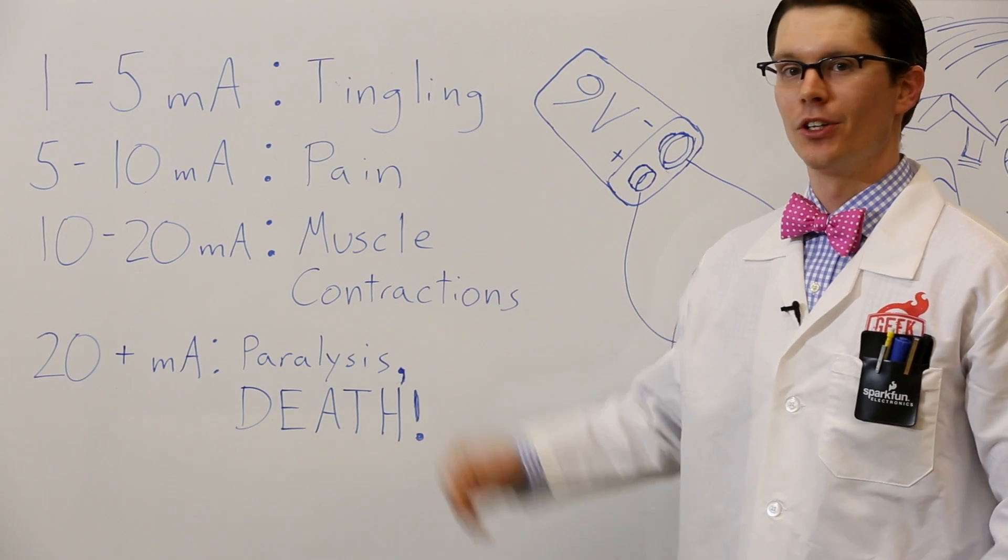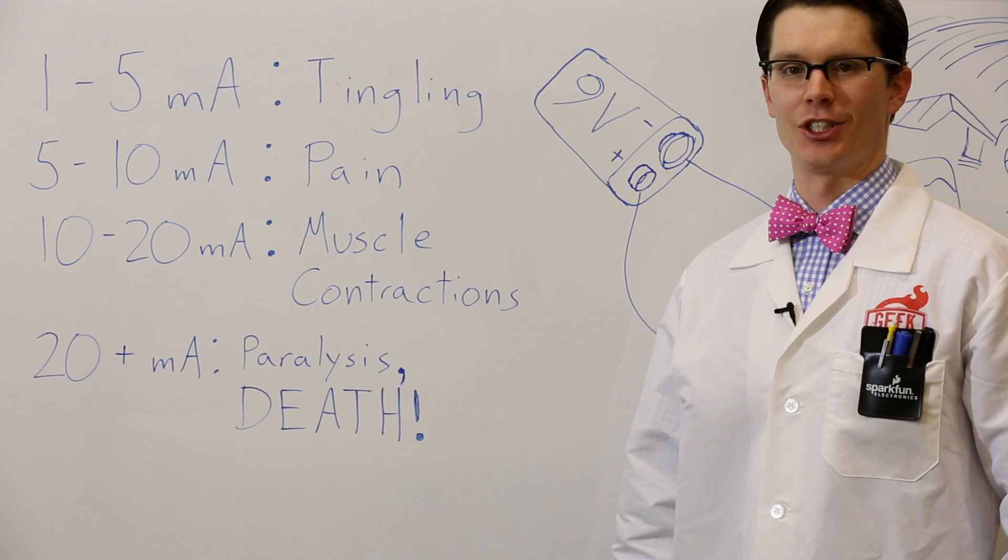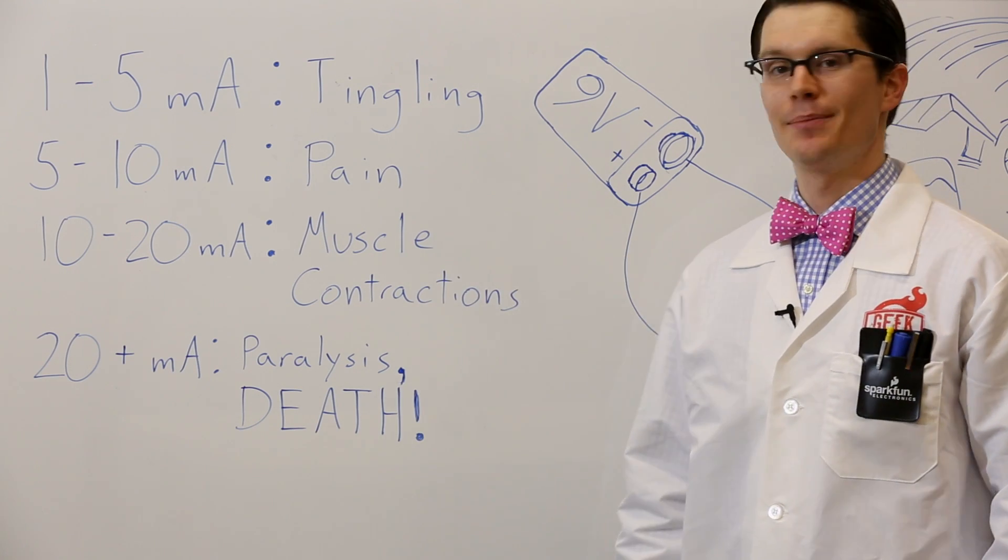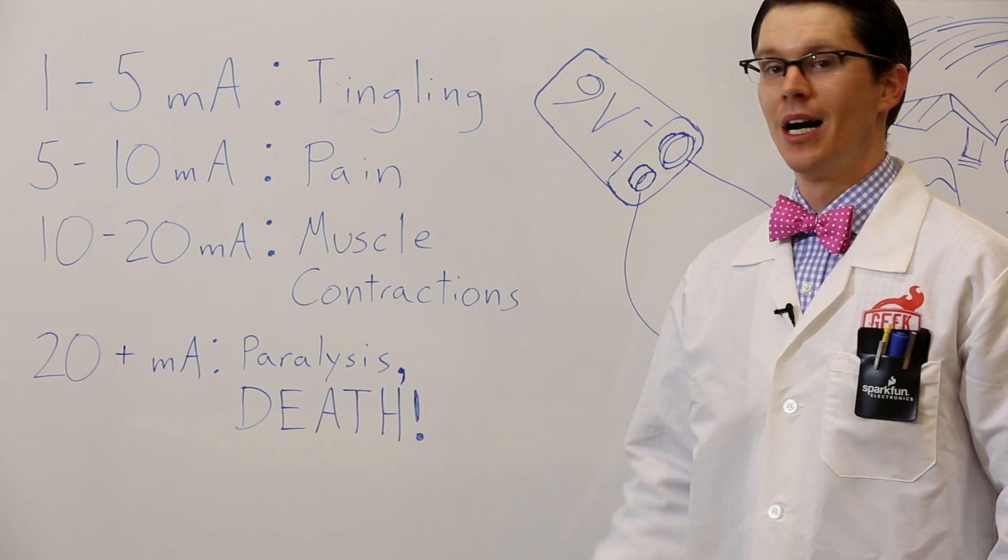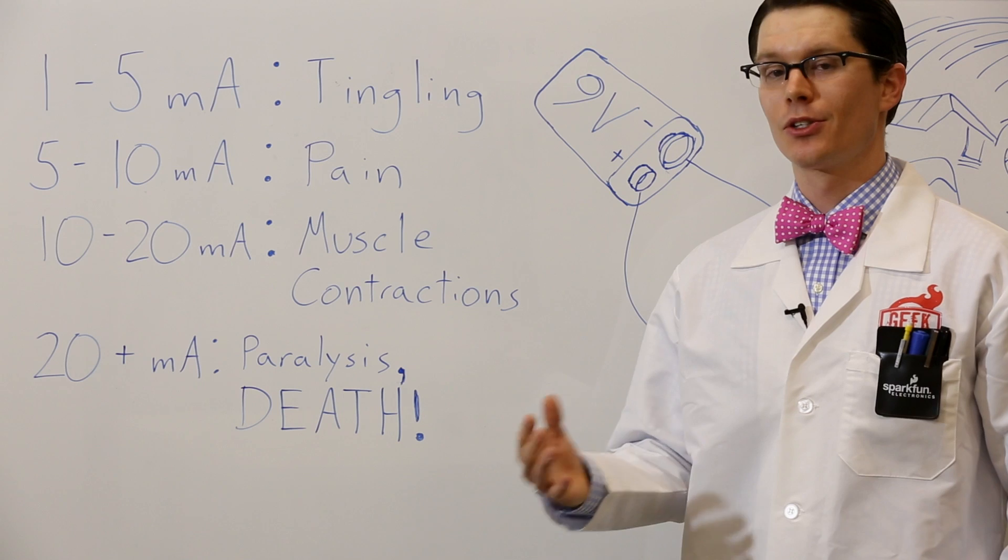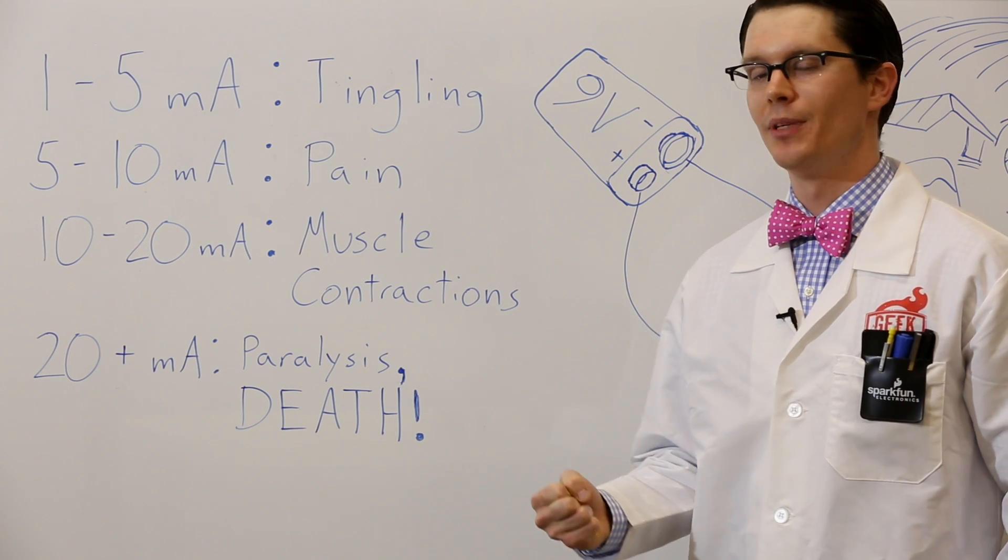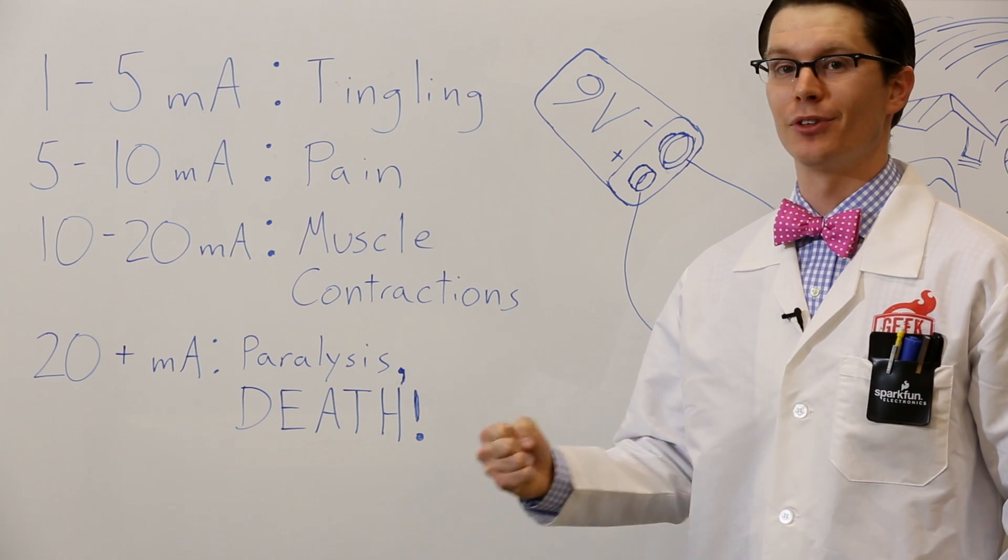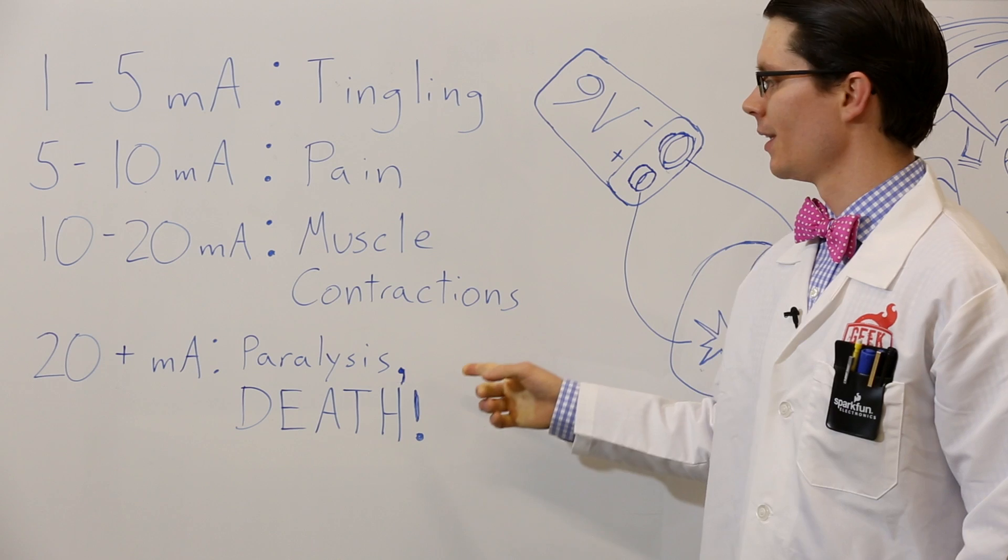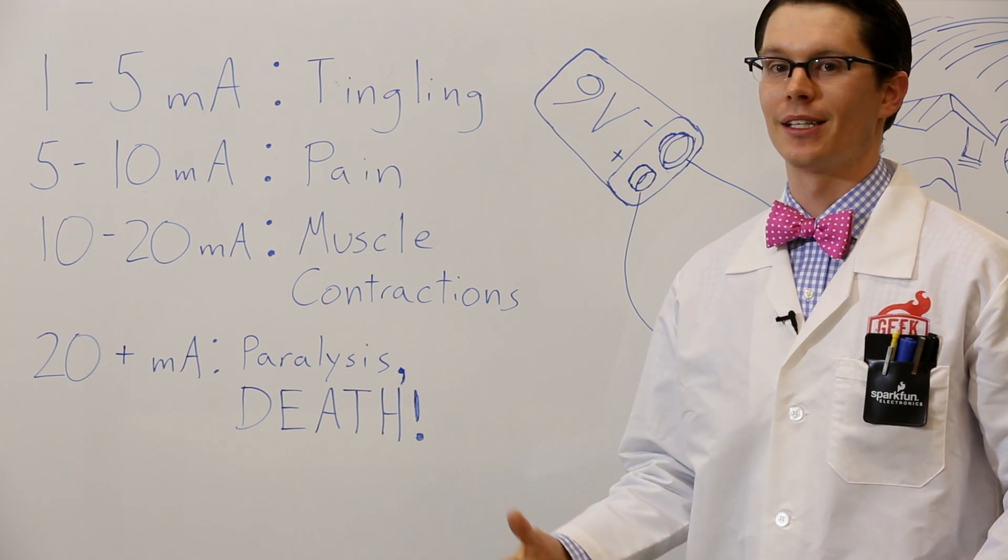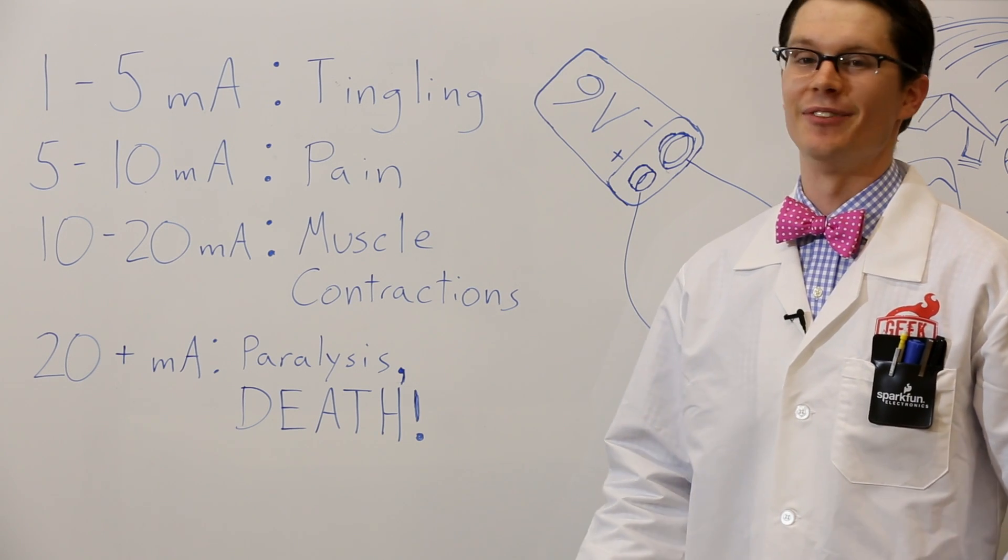One to five milliamps flowing through your body, you're going to feel a little bit of a tingling sensation. Between five and ten milliamps, you start getting into some real pain. Above ten milliamps, your muscles start involuntarily contracting, which means you might not be able to let go of whatever is shocking you. And above 20 milliamps, you're going to start to run into paralysis, and if enough current flows through your heart, even death.